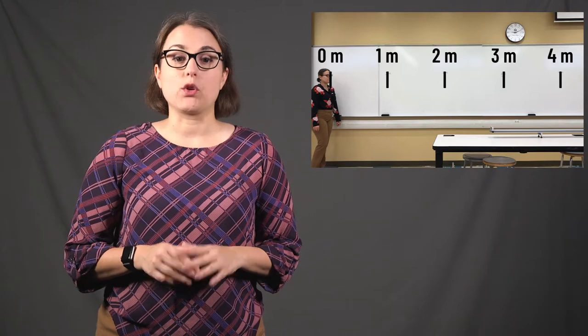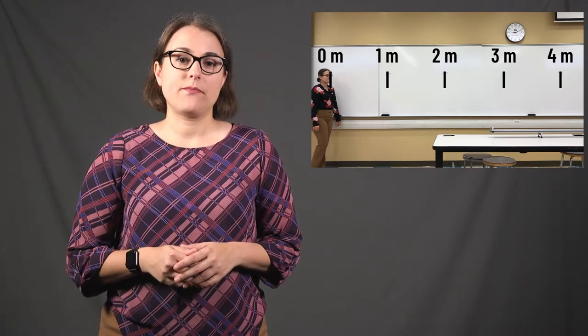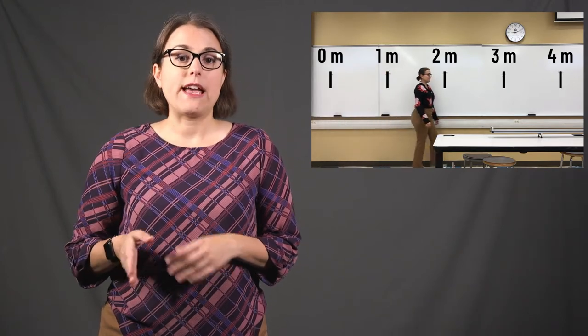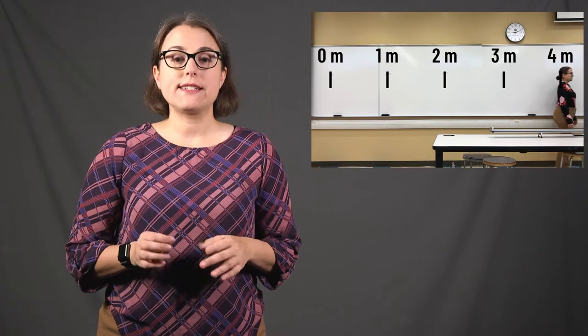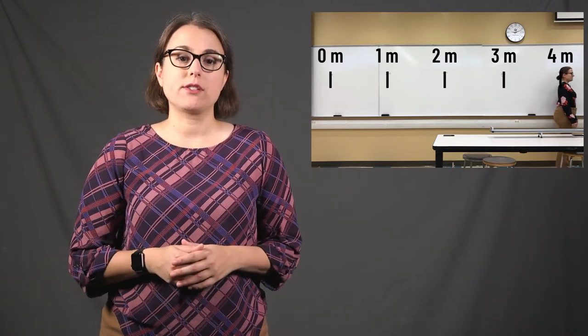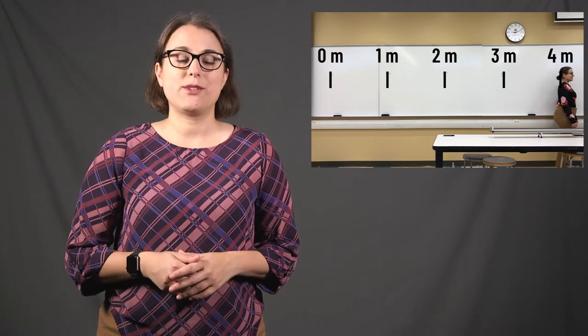Let's consider a straightforward example. In this video, I recorded myself walking at a mostly constant pace from one end of the classroom to the other. I marked on the whiteboard intervals of one meter to get an idea of the distance. I started at the zero meter mark and walked to the four meter mark. Therefore, the distance that I walked was four meters. My path describes the distance that I walked, which is equal to four meters.